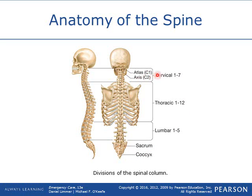A helpful mnemonic: cervical — you eat breakfast at seven; thoracic — lunch at 12; lumbar — five. So that's seven cervical vertebrae, 12 thoracic vertebrae, and five lumbar vertebrae.